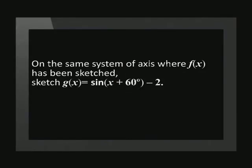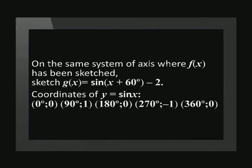On the same set of axes where f(x) has been sketched, sketch g(x) equals sine in brackets x plus 60 degrees, minus 2. We have values for both p and q. Let's start with p — when p is added, the graph shifts to the left.